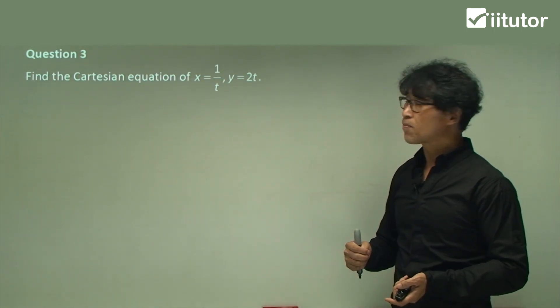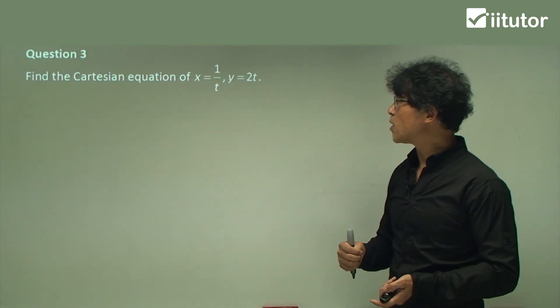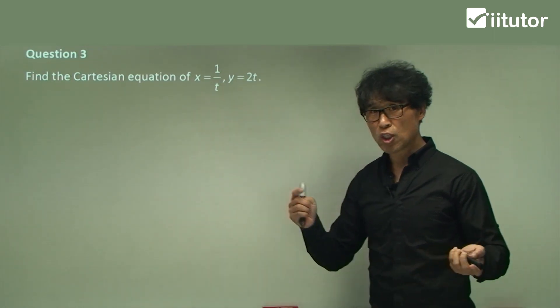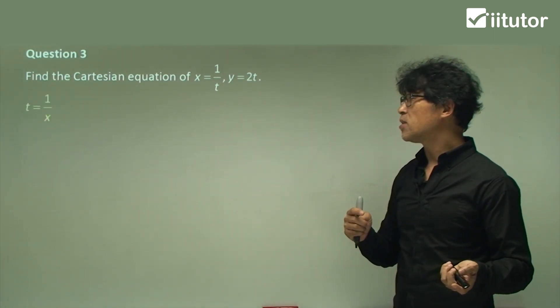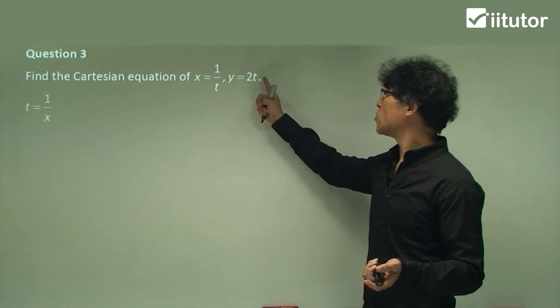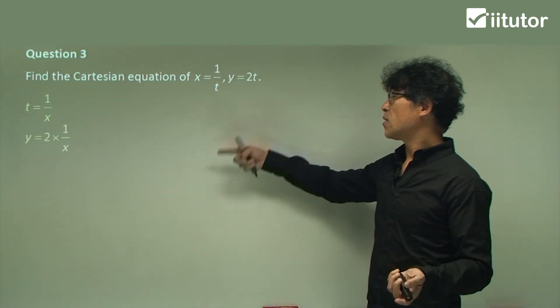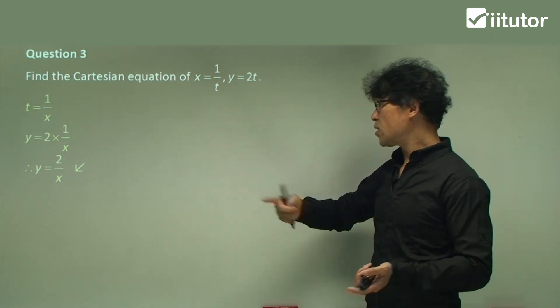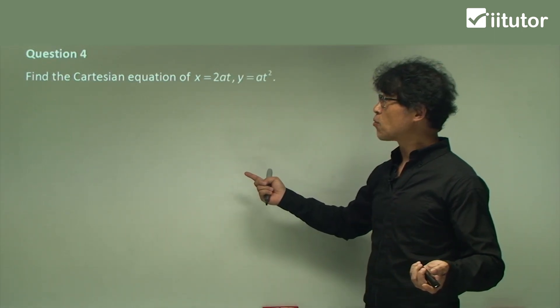Look at the third one. You probably have noticed what you can do. Now, x equals one on t. So how do you make t the subject? Yeah, one on x. Let's substitute one on x into here. That's it. Too easy. So t disappears.